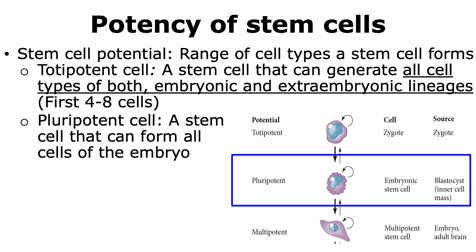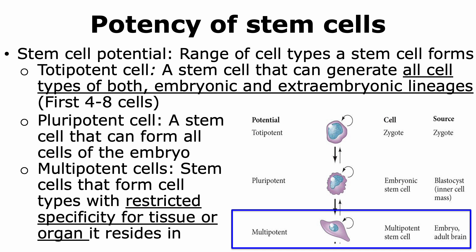The next type of stem cell is a pluripotent stem cell. This is a stem cell that is capable of producing all cells of the embryo; however, it cannot produce the extraembryonic lineages. Another type is a multipotent stem cell. Multipotent stem cells can produce cell types with restricted specificity depending on the tissue or organ they are present in. Thus, they are not as versatile as pluripotent stem cells. For example, a stem cell present in the brain can give rise to cells like neurons, but it will not be able to give rise to a stomach cell or a liver cell.